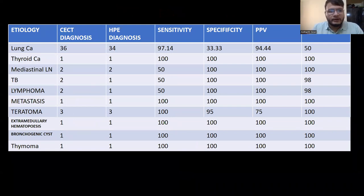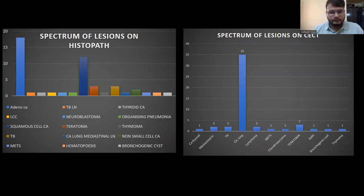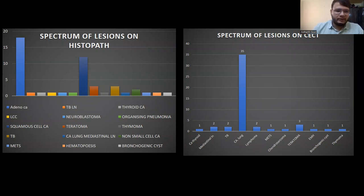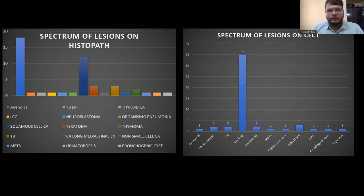Correlating CECT findings with histopathology, the sensitivity of CECT in diagnosing these lesions was found to be around 97%, confirming CECT as an ideal modality. Specificity and positive predictive value were also found to be high when compared with histopathology as the gold standard. The spectrum of lesions on histopathology aligned with those delineated by CECT, indicating good diagnostic capability. Adenocarcinoma was the highest in number, followed by squamous cell carcinoma, and teratoma was the most common among mediastinal lesions.